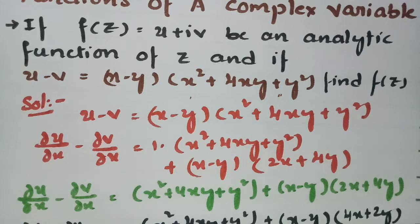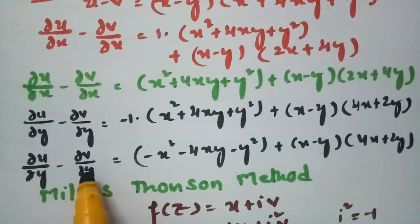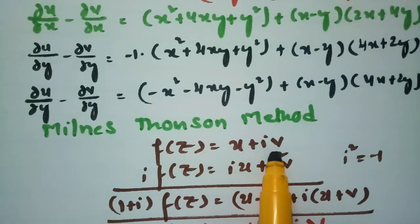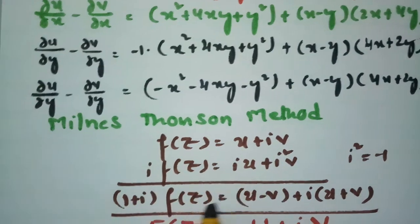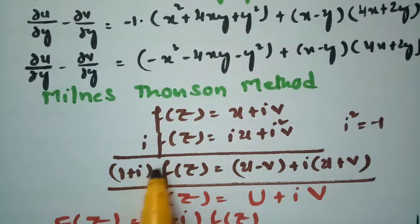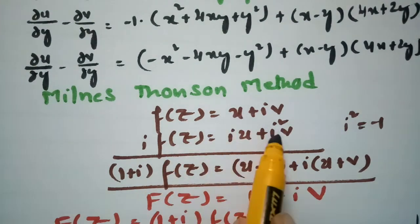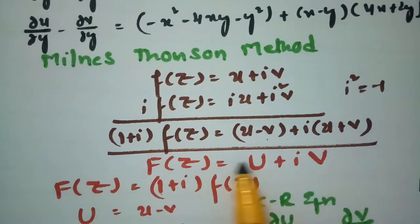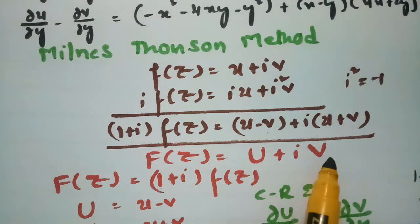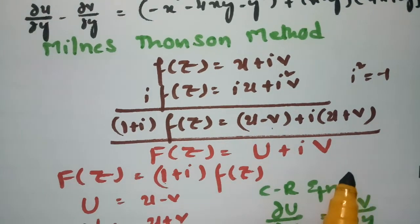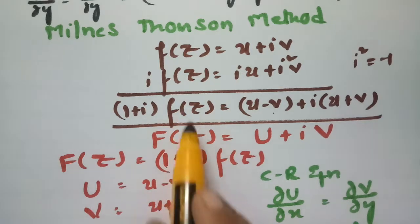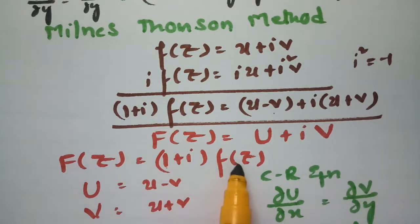To summarize: given u - v, first differentiate with respect to x and y and keep those values aside. Using Milne's Thompson method, write f(z) = u + iv, multiply by i and add to get (1 + i)f(z) = (u - v) + i(u + v). Transform to capital F(z) = U + iV where U = u - v and F(z) = (1 + i)f(z).